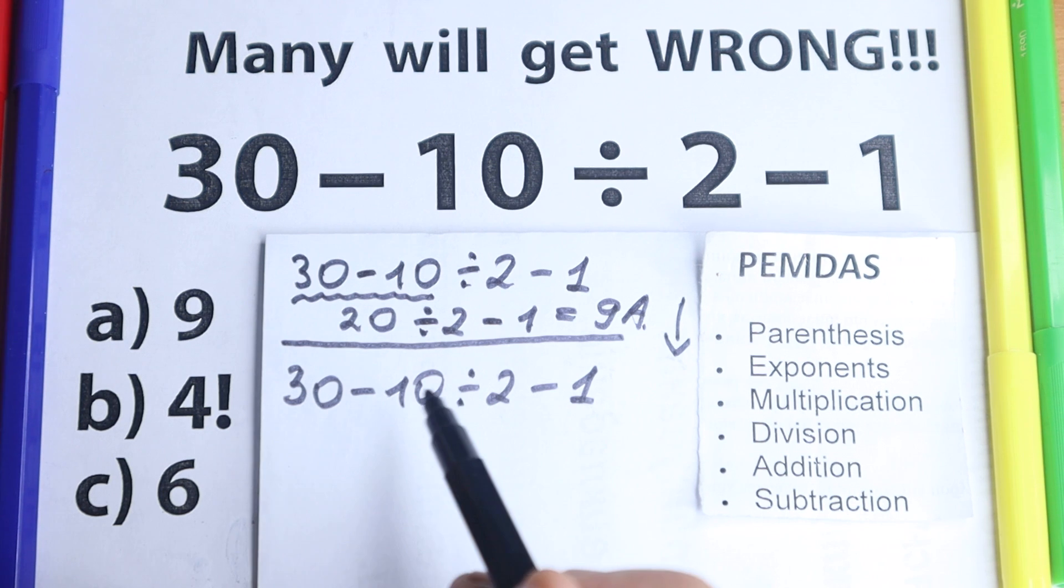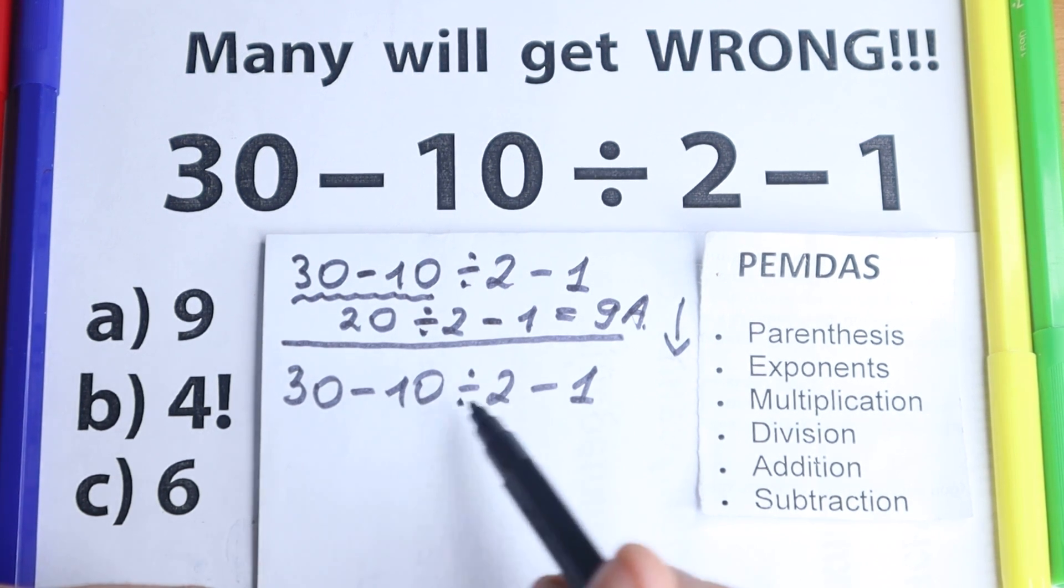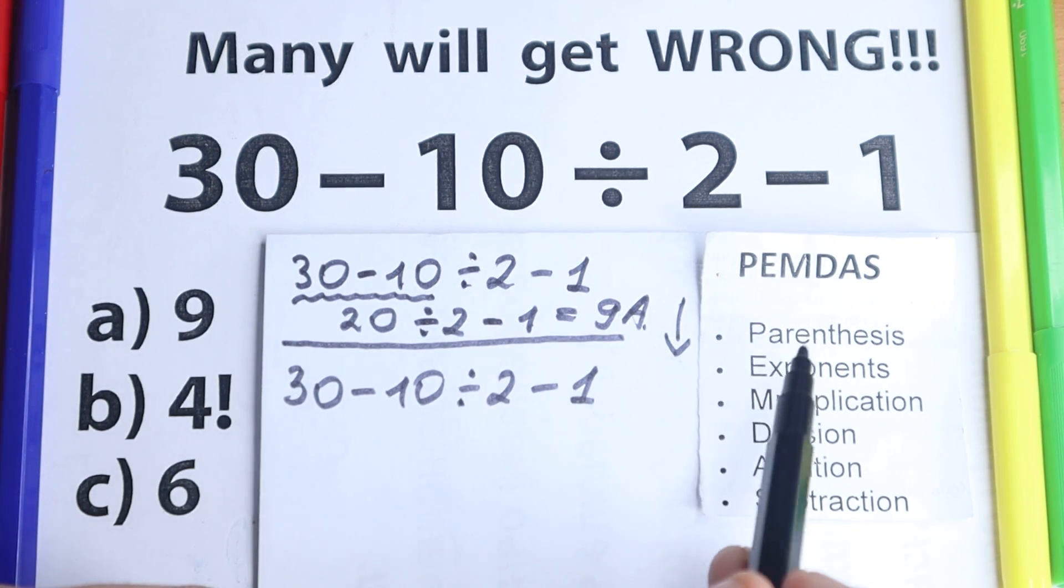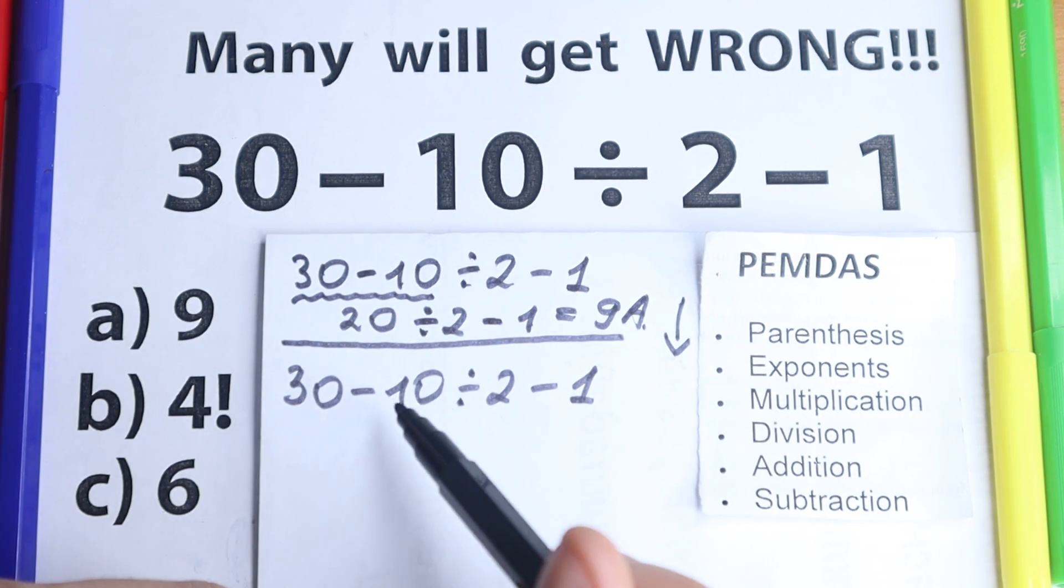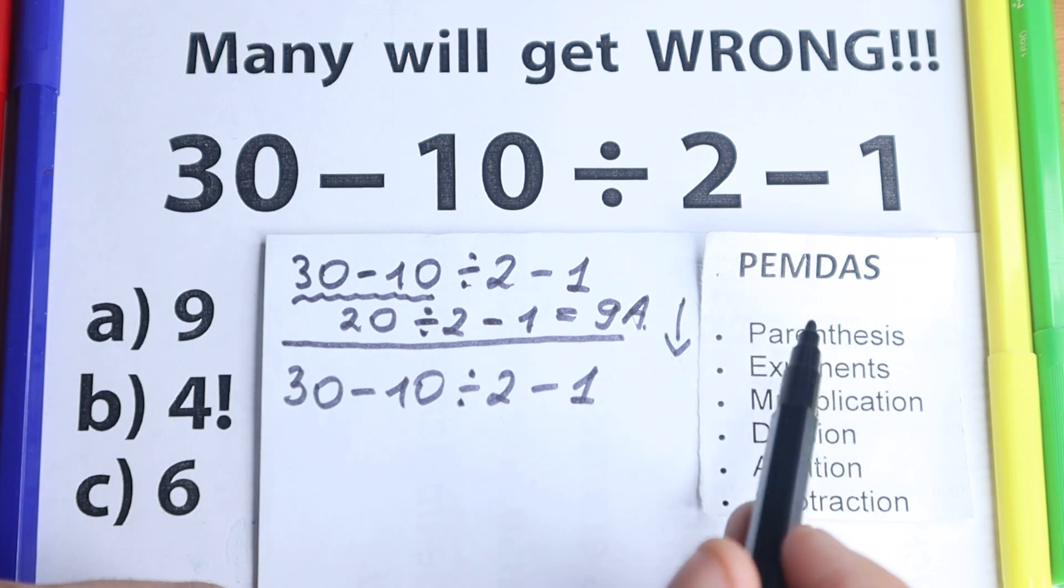According to PEMDAS the first step is parentheses. Now we need to scan, are there any parentheses right here? No, I don't see any of those, which is really great. The second step, we have exponents. Are there any exponents right here? No, I don't see any of those, we don't have any exponents, so we just go to the next step.